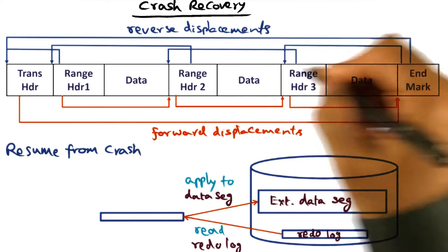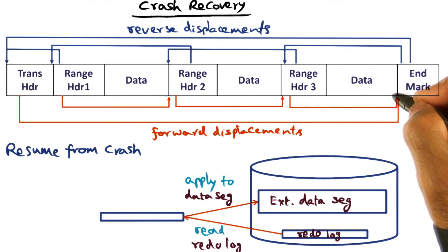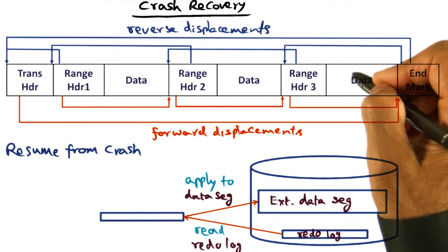Similarly, what is the new data for this range, new data for this range? That's the structure of this redo log record that has been created and forced to the disk.